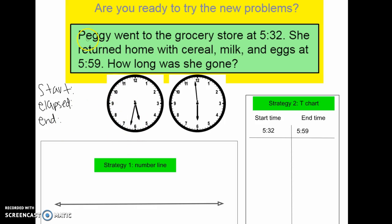So let's take a look at our first word problem. Peggy went to the grocery store at 5:32. She returned home with cereal, milk, and eggs at 5:59. How long was she gone? We don't really need to know that she bought cereal, milk, and eggs. That doesn't really matter in our problem. But we do know that this is our start time, 5:32.